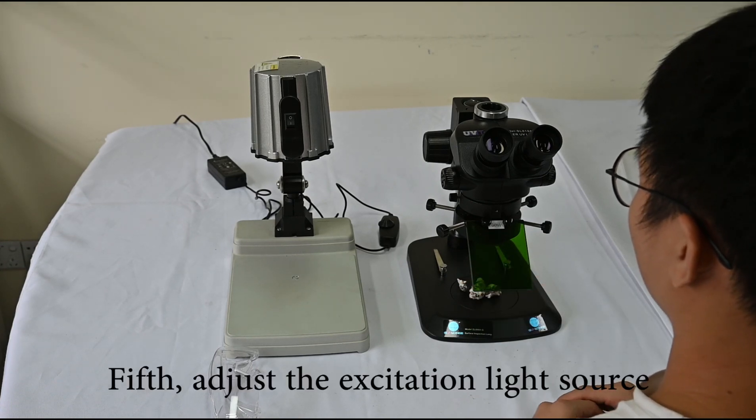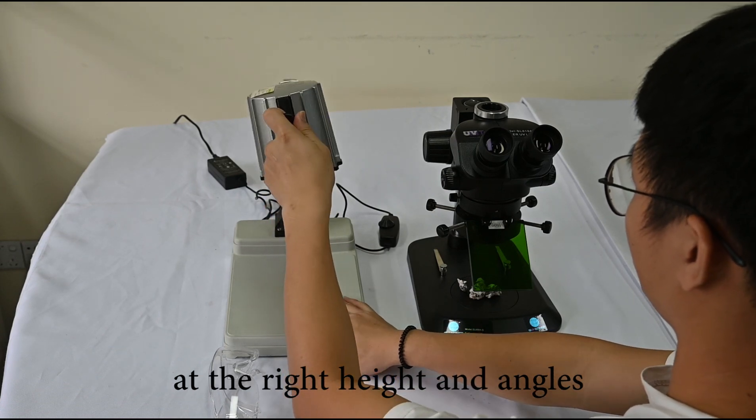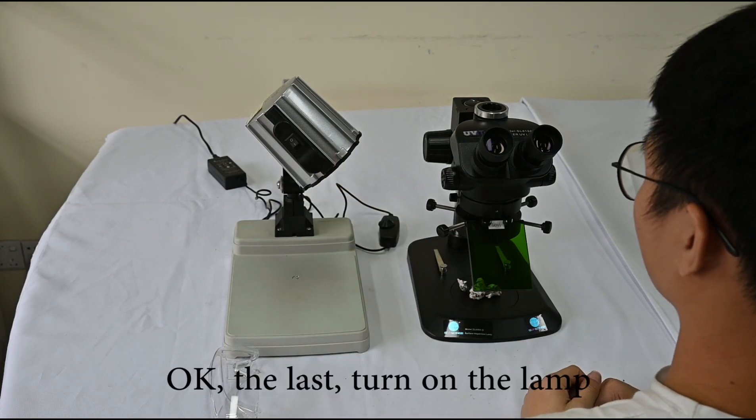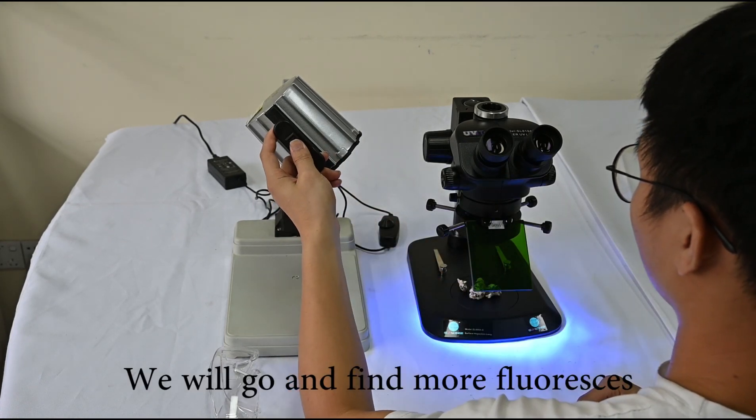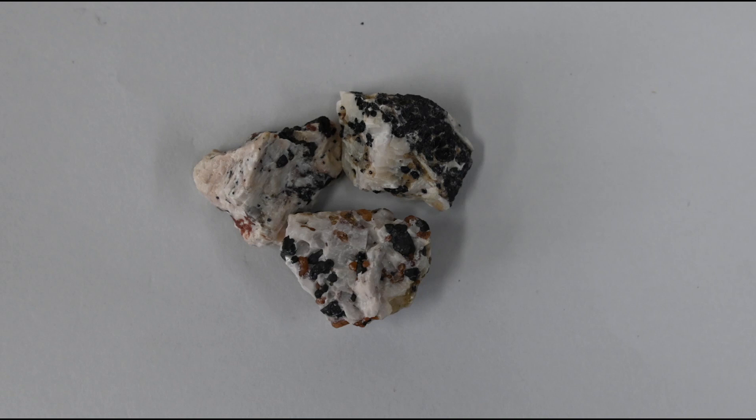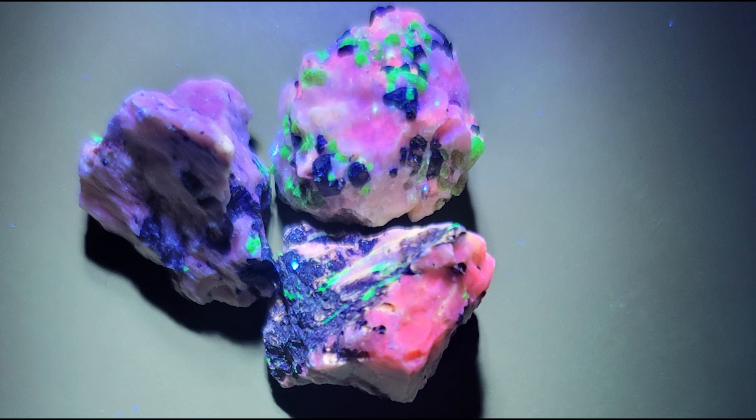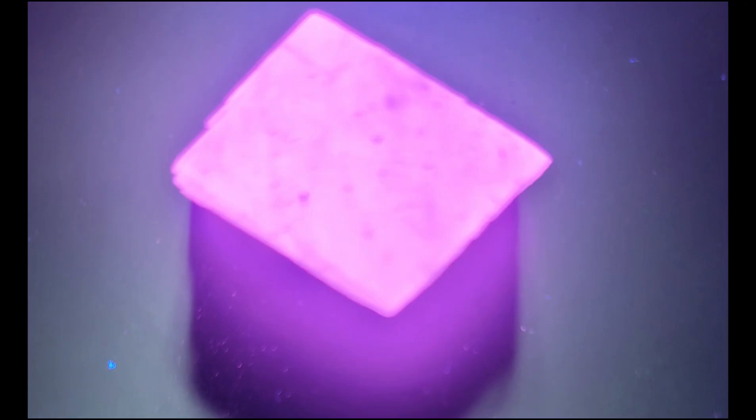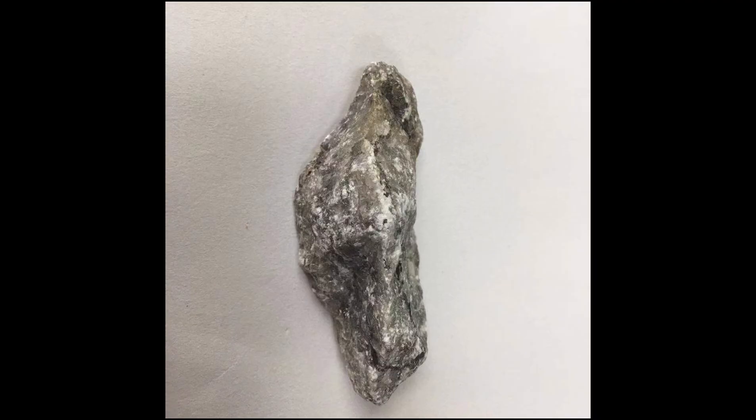Fifth, adjust the excitation light source at the right height and angles. Okay, at last, turn on the lamp. We will go and find more fluorescence.